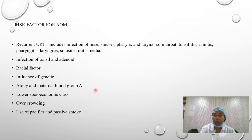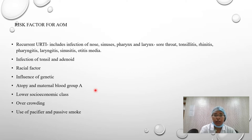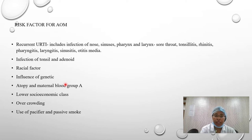Tonsillitis is inflammation of the lymphoid tissue in the oropharyngeal region, causing pain. Rhinitis is inflammation of the nasal mucosa. Since the ear, nose, and throat are connected, infection of one structure may spread to another. There is also a racial factor that increases the incidence of acute otitis media, and genetic influence is seen — children more prone to allergic conditions like allergic rhinitis are also more prone to AOM.